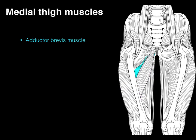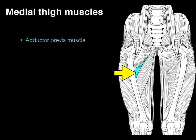Then our adductor brevis gets its name because it's shorter. It also arises from the pubic bone and courses down to attach on the back of the femur on the linea aspera.